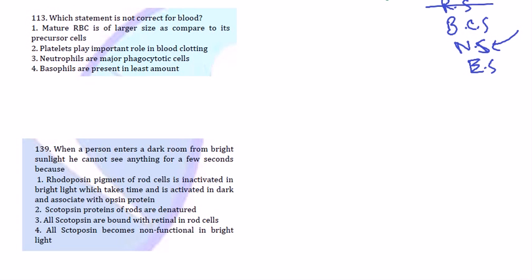Let's see, which statement is not correct for blood? Now they are giving us some statements, so three of them are wrong, one is correct about the blood. So you need to learn the basics. If you know basics you can answer this question in no time. If you don't know the basics you can't simply answer the question. Let's see, mature RBC is of larger size as compared to its precursor cells.